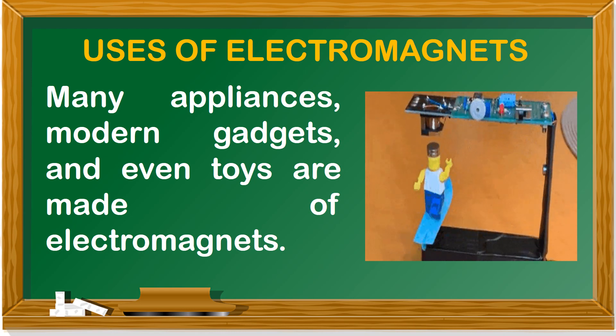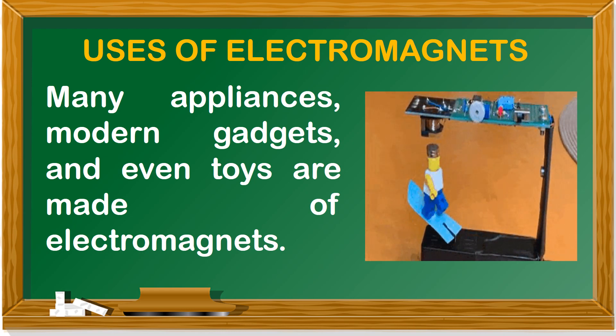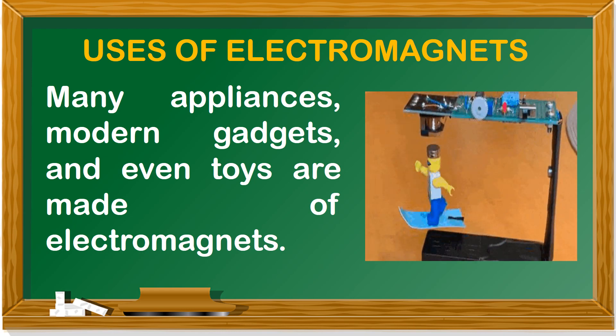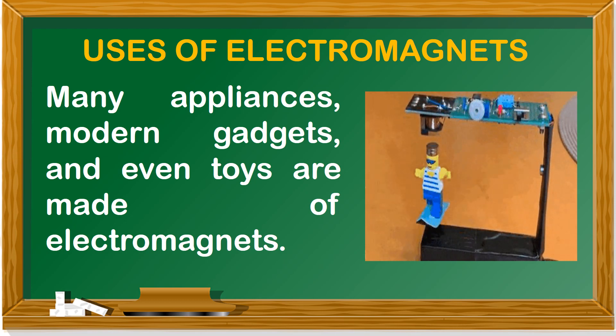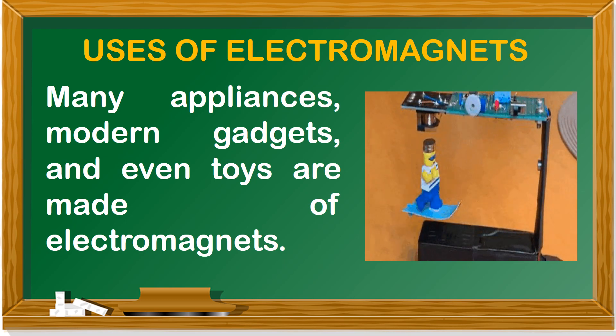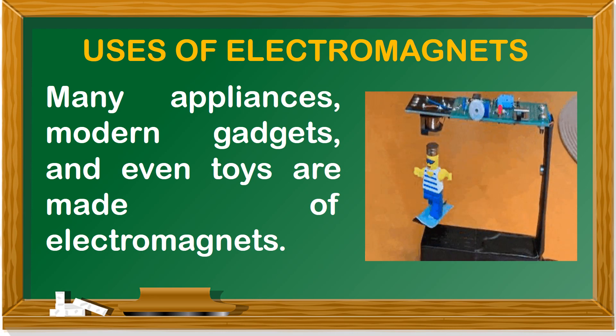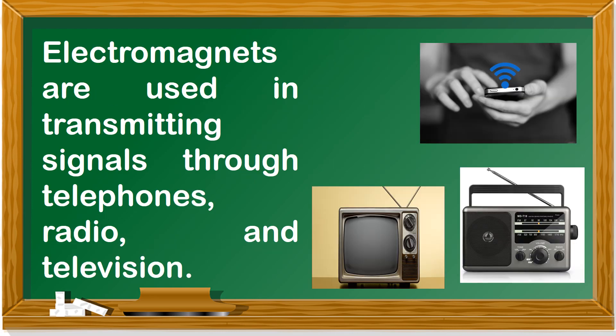The uses of electromagnets. Many appliances, modern gadgets, and even toys are made of electromagnets. Electromagnets are used in transmitting signals through telephones, radio, and television.